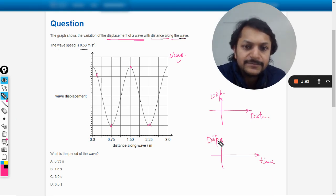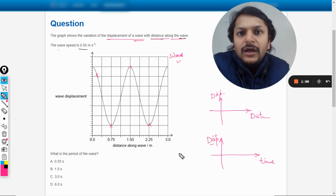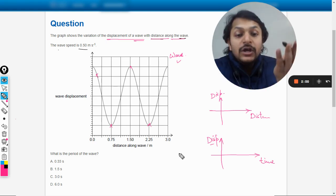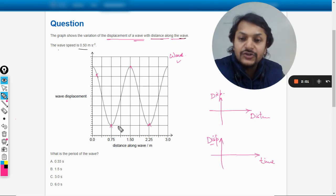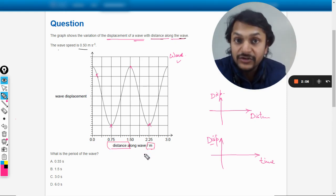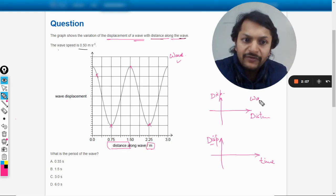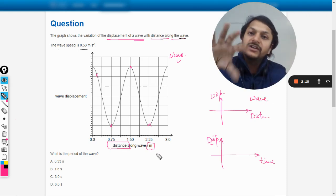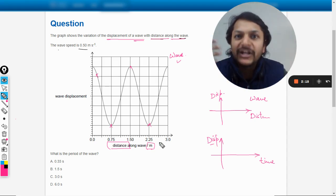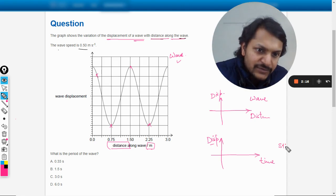Now whenever this kind of a graph is given, you have to make sure what is there on the x-axis. You see on the x-axis it's distance given here, and the unit is given in meters, so they are literally talking about wave. But if they would have given time, it was not the wave. What was it? It is the simple harmonic motion.